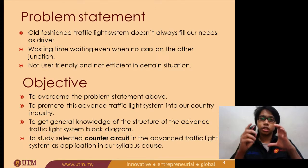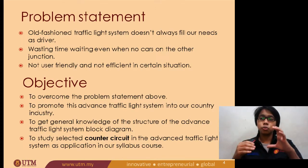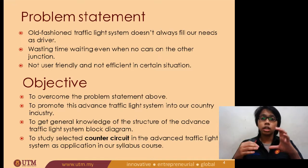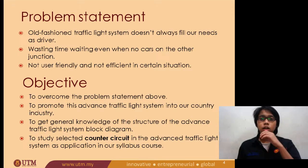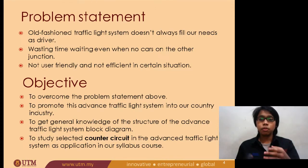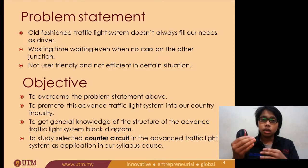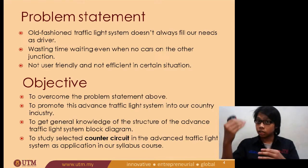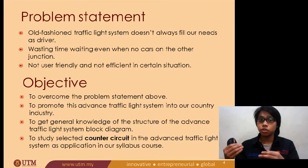The old traffic light uses a timer to change in order to make the system work. For example, at the junction of the road, the people on the other side have to wait for the other side of the junction to get the light to turn red so that people can move.